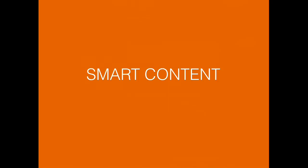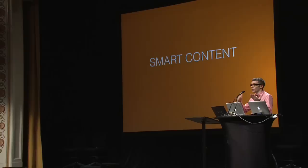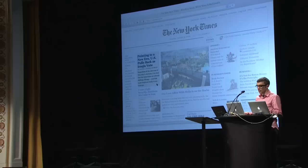Another concept we've pushed a lot is this idea called smart content. Everyone who gets a print newspaper gets what we call dumb content — it doesn't know what you've read or haven't, and it doesn't know your preferences. But when you look at a digital experience, it can become intelligent. An example: imagine you go to the New York Times website.